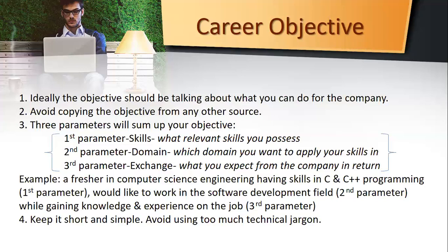Always remember, if you are applying for a software development role or associate software engineer role, follow this career objective and change it based on your skills and department. Instead of C and C++, if you have .NET skills you can mention .NET, if you have Python you can mention Python, or if you are good with big data you can mention business analytics or big data. If you are good with CCNA — Cisco Certified Network Associate — you can mention that too. And one more thing: when it comes to different jobs and different designations depending on the industry, your career objective keeps on changing.